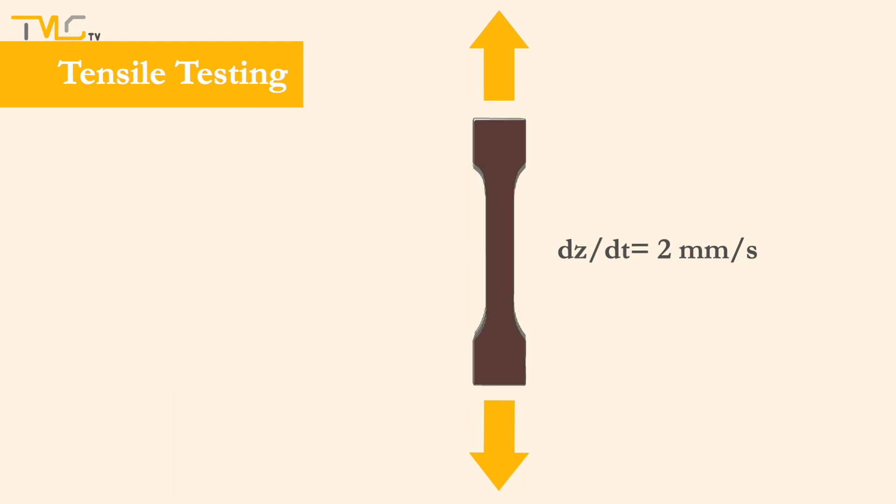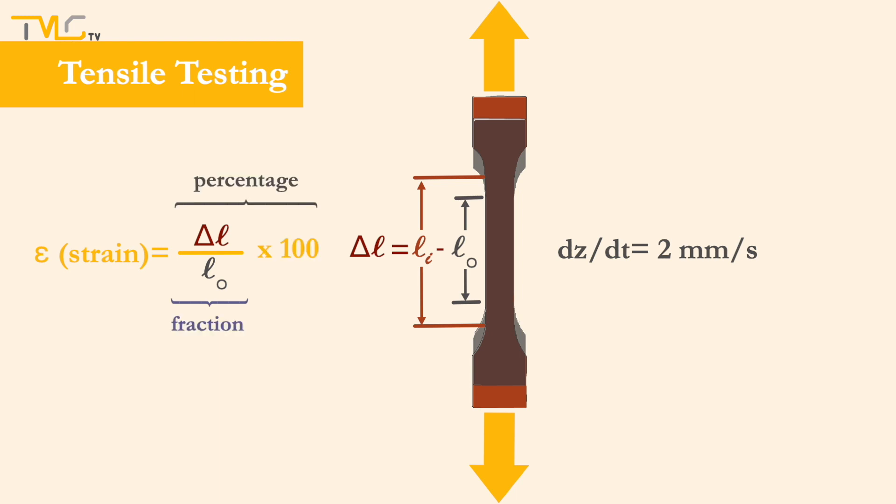In addition to stress, the specimen experiences elongation during tensile testing, which is equal to the change in specimen's gauge length. The ratio of the recorded change in the gauge length to the initial gauge length is called strain, which is a dimensionless parameter reported either in fraction or in percentage.